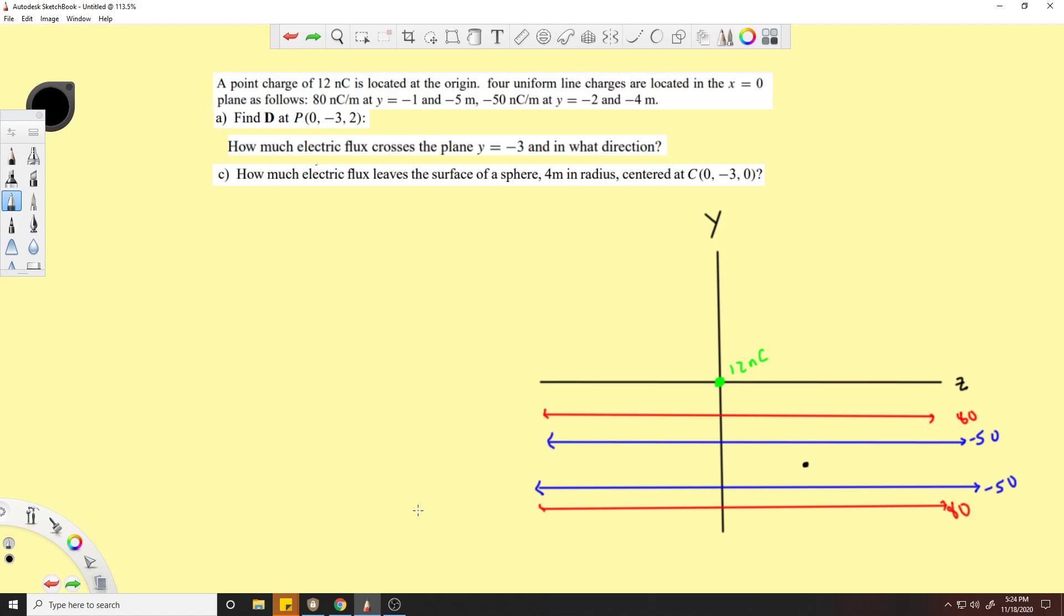A point charge of 12 nanocoulombs is located at the origin along with a few buddies. It's got four uniform line charges located in the x equals zero plane, and they have some values and are located at some coordinates.